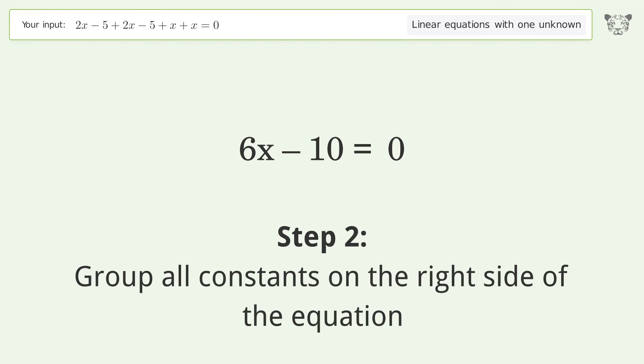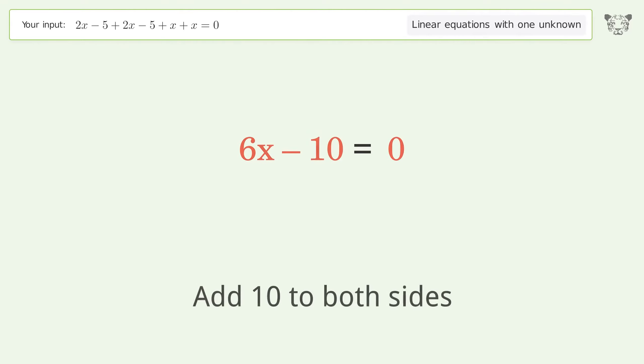Simplify the arithmetic. Group all constants on the right side of the equation. Add 10 to both sides. Simplify the arithmetic.